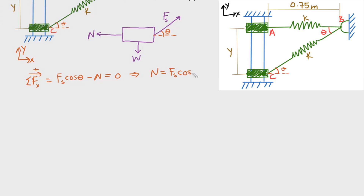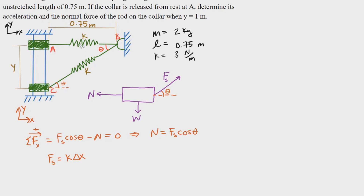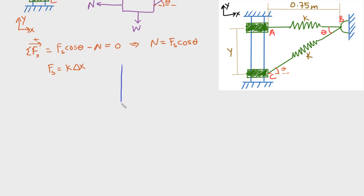The spring force is the spring constant times the stretch: fs = k·Δx. To find how much the spring has stretched from A to C, we find the length of the spring at point C minus its unstretched length. We define a right triangle using the geometry of the problem. I'll redraw that triangle with sides 0.75 m (defined as l), y, and the hypotenuse.